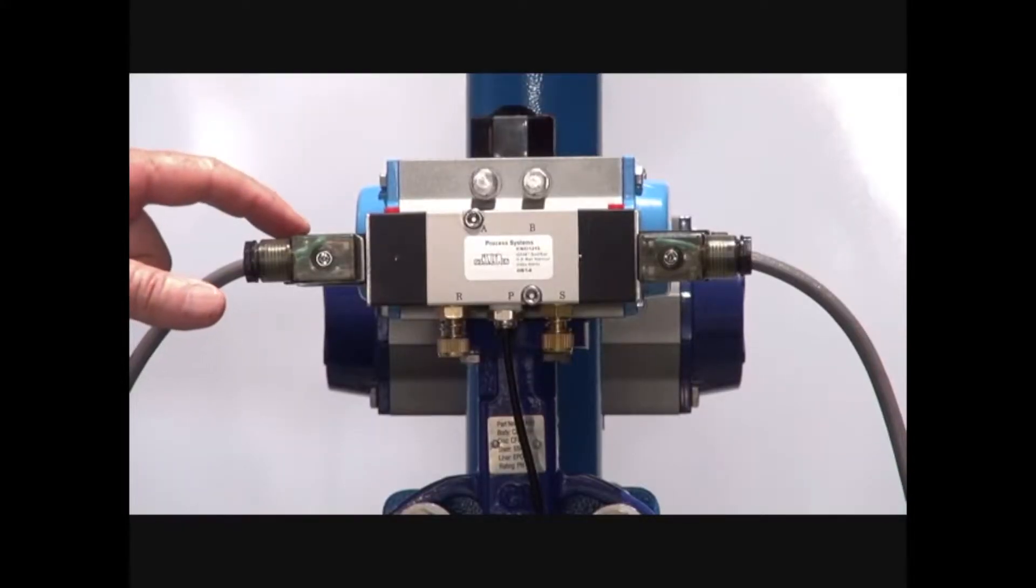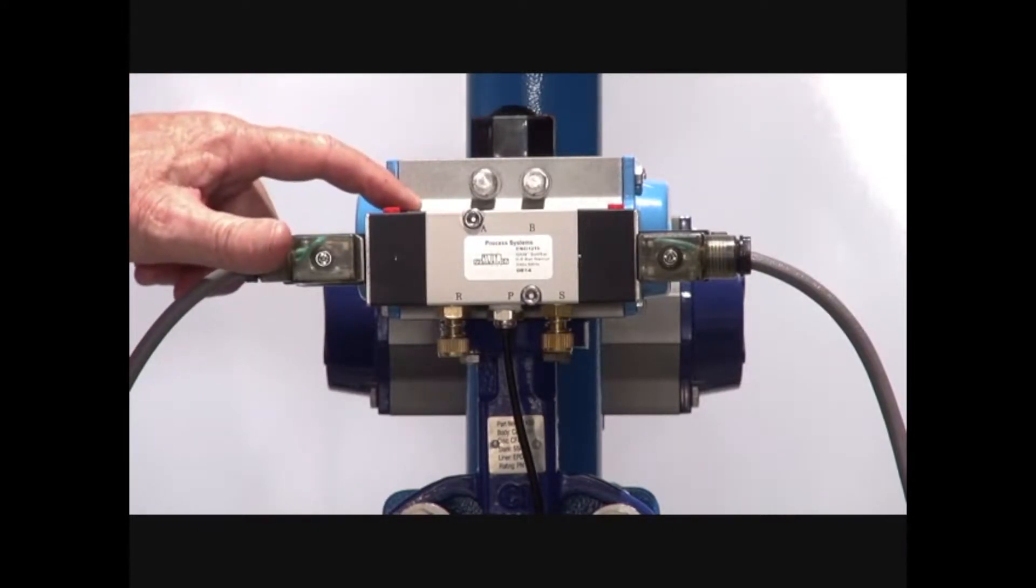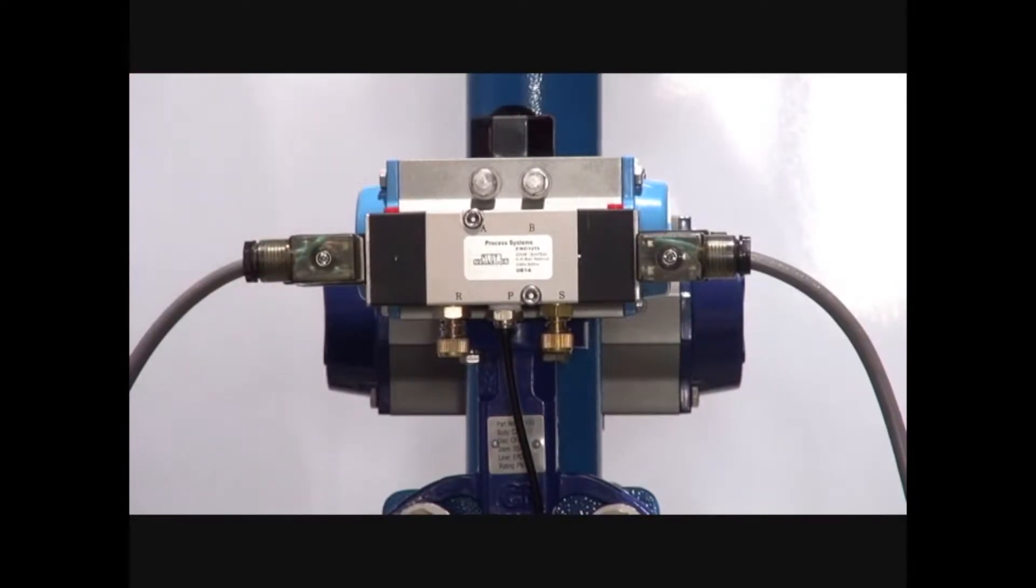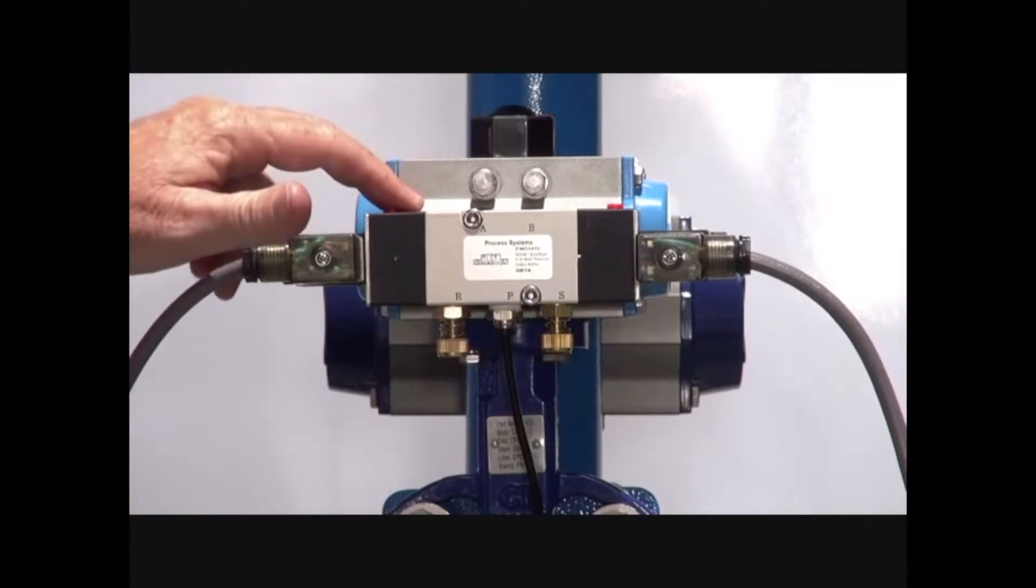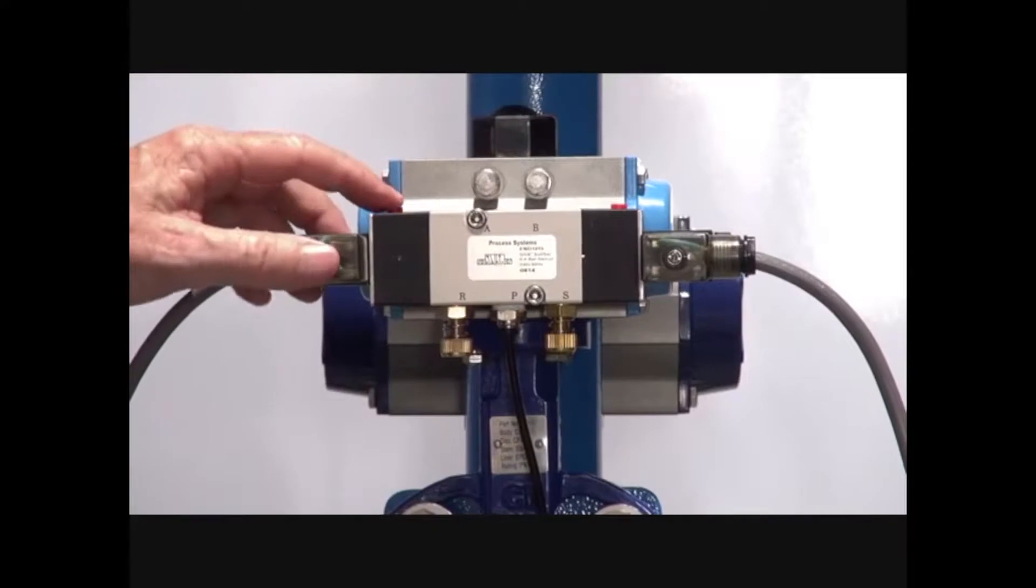These are double solenoid valves with direct interface onto actuators. All our pneumatic actuators have NEMER interface. The units are designed to go directly onto the actuator, come complete with a screw set and manual override function.